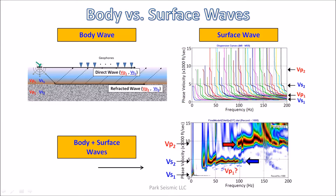Are these two horizontal energy trends really body wave phenomena, or can they be part of surface wave phenomena? Let's consider those body waves that propagate horizontally along the surface, just like surface waves do. These body waves will also be presented as seismic events in a normal MASW dispersion image. There are two types of such body wave events: the direct wave and the refracted wave.